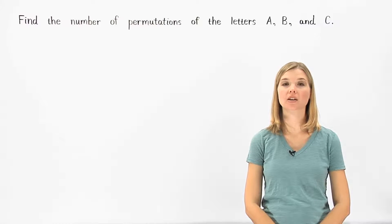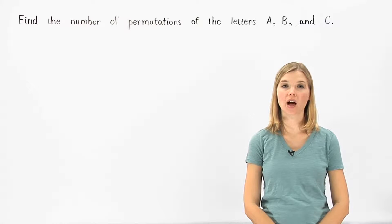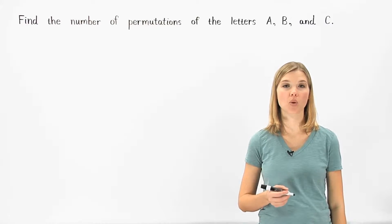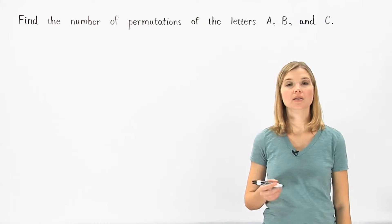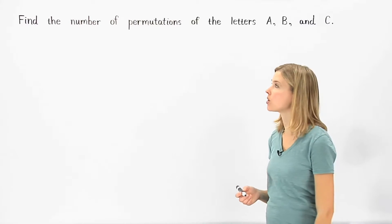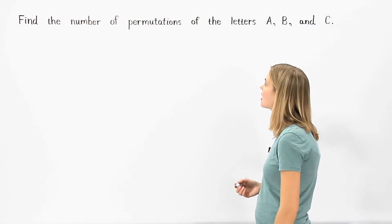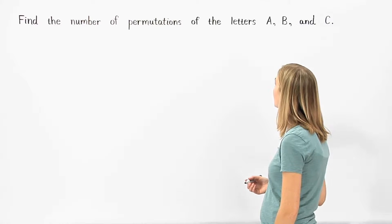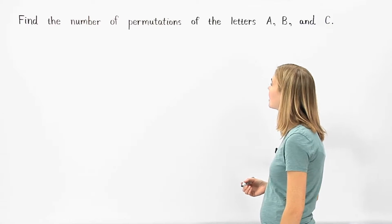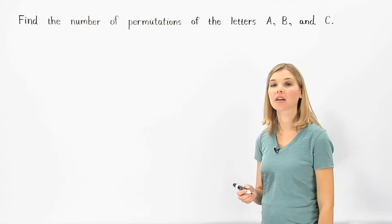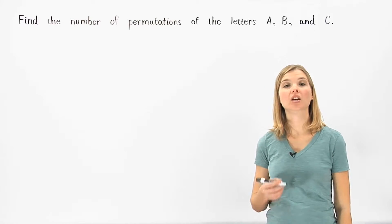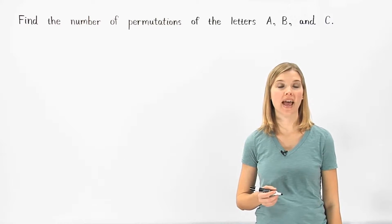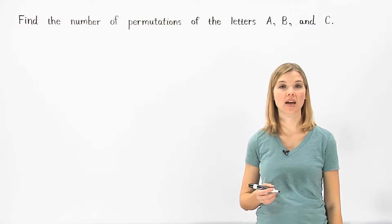A permutation is an arrangement of objects in which order is important. In this example, we find the number of permutations of the letters A, B, and C by finding the number of ways we can arrange their order.